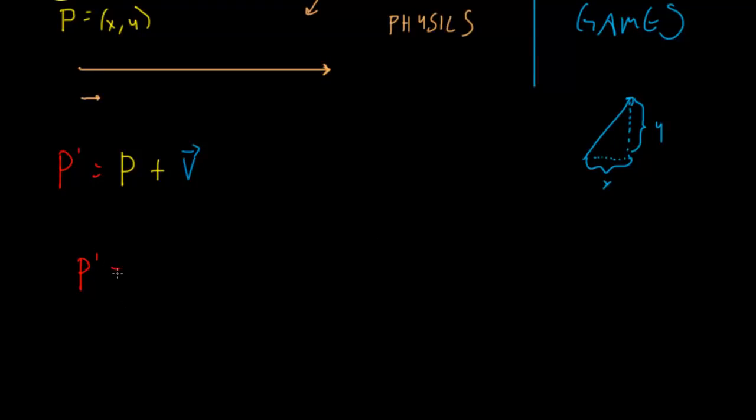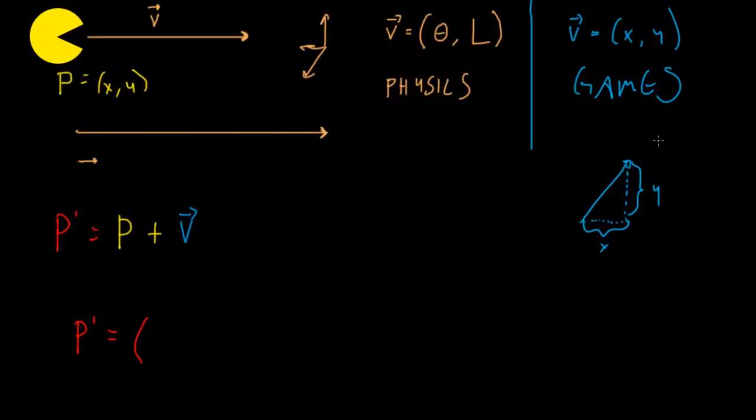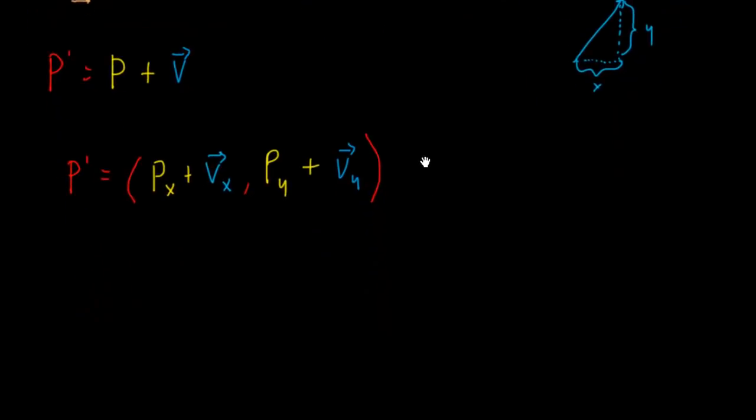Let's break that down and see exactly what that entails. P-prime equals, let's look at the x-component of P-prime. We have P. First, we need the x-component of P, and then we're going to add to that the x-component of the vector. That's all we need. So the new x-position is going to be just the old x-position plus the x-value of the vector. And then for the y-value, it's going to be the same thing. The y-component of the point plus the y-component of the velocity vector of Pac-Man. And there we go. That's it. That's all we need. This is our formula for updating Pac-Man's position using a vector.